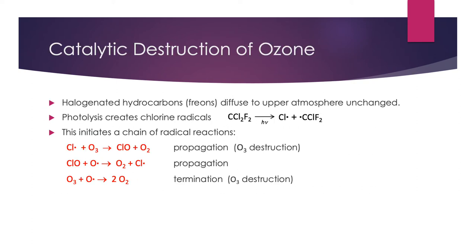What happens when we have chlorofluorocarbons — the halogenated hydrocarbons or freons? If they don't have hydrogen attached — just chlorines and fluorines on the carbon — they can diffuse into the upper atmosphere unchanged. Those carbon-halogen bonds are very strong, so they resist all chemistry in the troposphere. They get up into the ozone layer in the stratosphere, where they are exposed to sunlight and undergo photolysis. Sunlight carves a chlorine atom off the chlorofluorocarbon, leaving a chlorofluorocarbon radical and chlorine atoms. It's really the chlorine atoms that cause the problem we worry about.